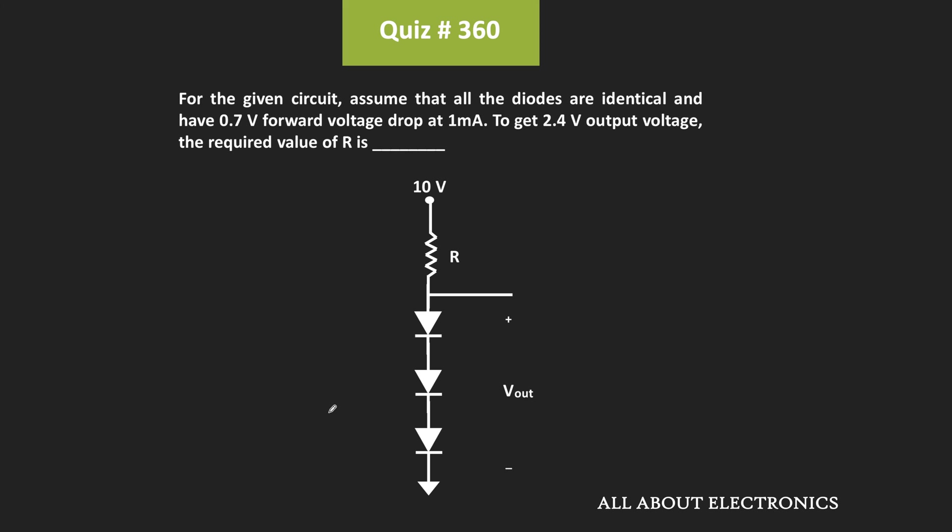Now here, these three diodes are identical and they are connected in a series connection. Moreover, we have been given that the forward voltage drop across each diode is equal to 0.7V whenever the current through them is equal to 1mA.